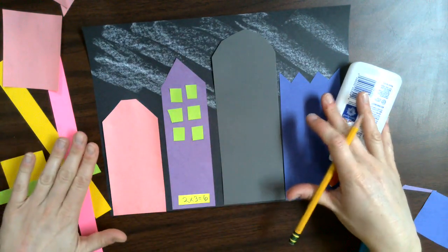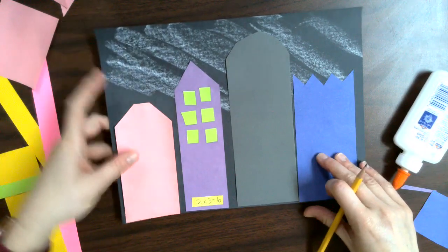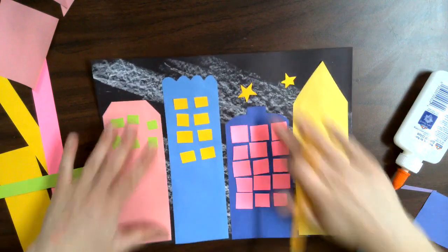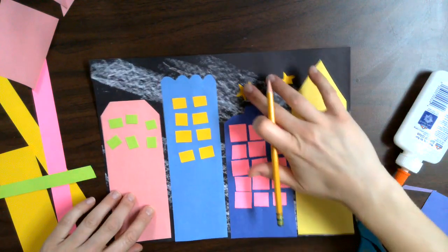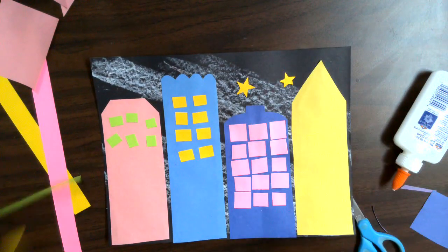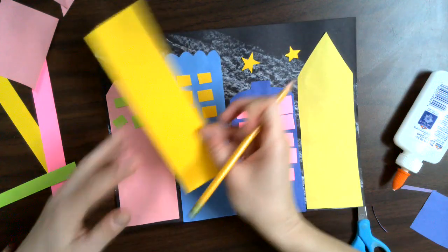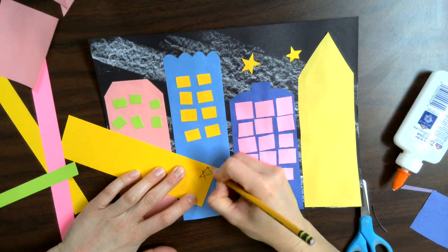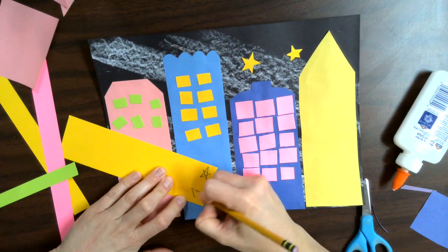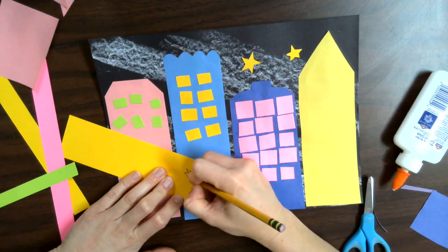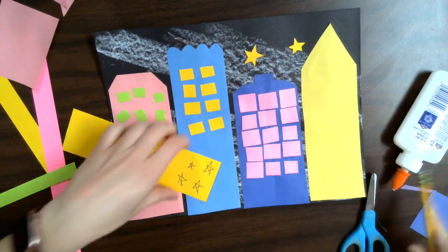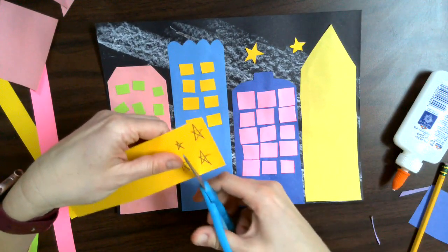So you'll do that for all of your buildings and then your very last step, and if you have time, is you can add some stars in the sky. So I did these by, I have this fat piece of bright yellow paper. I'm going to draw a star or multiple stars and again variety is good. Make some big, make some small and you'll then cut them out.